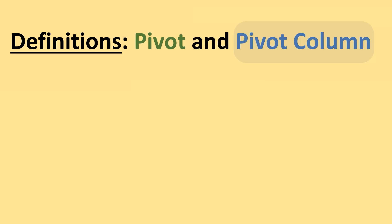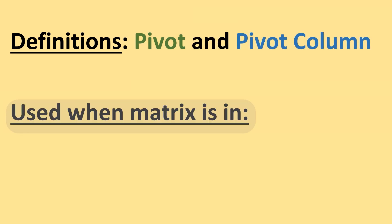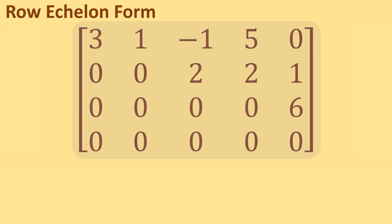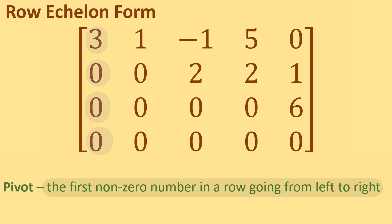Pivots and pivot columns are definitions used when working with matrices in row echelon form or reduced row echelon form. This matrix here is in row echelon form. A pivot is the first nonzero number in a row going from left to right.